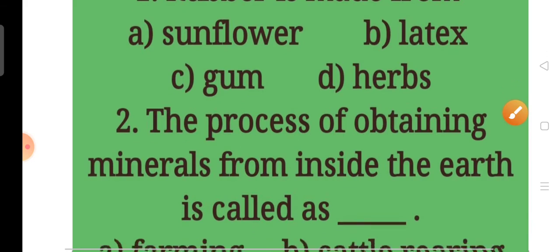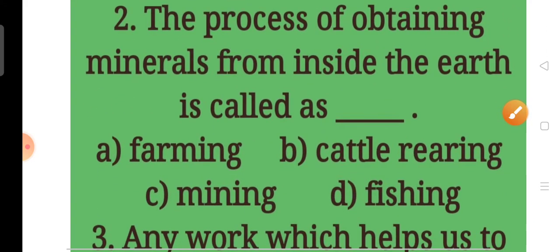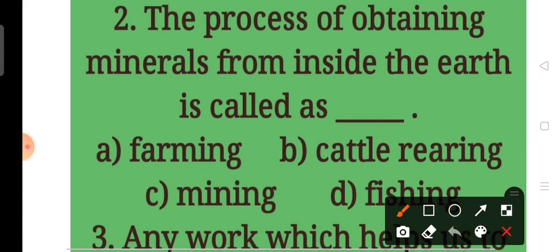Now everyone, come to question number 2. The process of obtaining minerals from inside the earth is called as dash. A. Farming, B. Cattle rearing, C. Mining, D. Fishing. Children, our answer will be C. Mining.